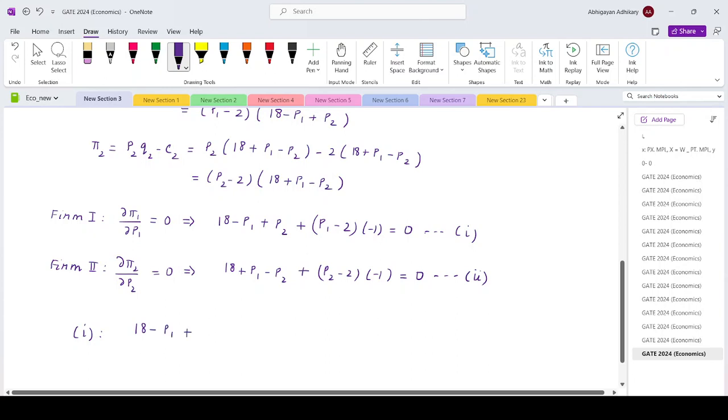Equation 1 gives us 18 minus P1 plus P2 equals P1 minus 2.